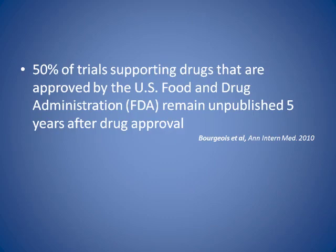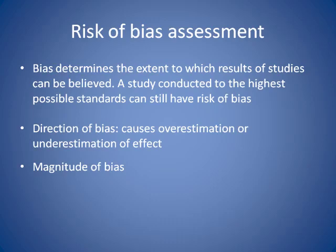Moving on to another aspect of evidence synthesis where we have problems: risk of bias assessment. Bias is basically determining the extent to which the results of a study can be believed — how much can we trust the findings? A study can be conducted to the highest standards for that setting and still have a risk of bias. Blinding is hugely important in clinical trials, but there will be some trials where it's just not feasible. We try to look at the potential direction and magnitude of the bias — whether it causes overestimation or underestimation of effect.